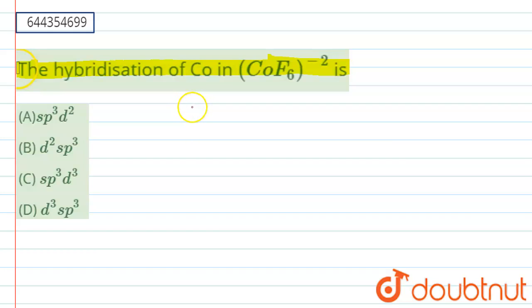We write the complex here, that is CoF6 minus two. So basically if you want to find the oxidation state, let us assume the cobalt has an oxidation state of x. Then we have to multiply six times minus one because fluorine has an oxidation of minus one, and it equals to whole minus two. So it gives out the value of plus four. It means our cobalt has an oxidation of four.